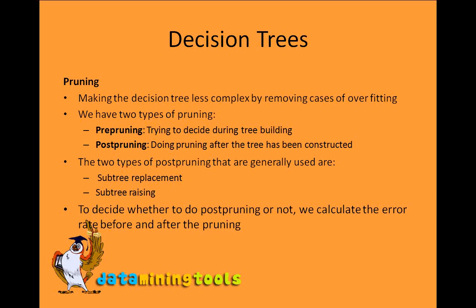The next thing is pruning. Pruning is basically making the decision tree less complex by removing cases of overfitting. The two types of pruning are pre-pruning, which tries to decide during tree building, and post-pruning, which is done after the tree has been constructed. The two types of post-pruning generally used are subtree replacement and subtree raising.